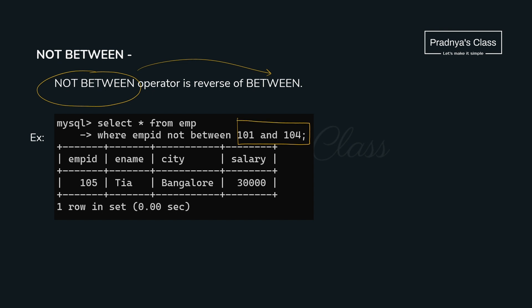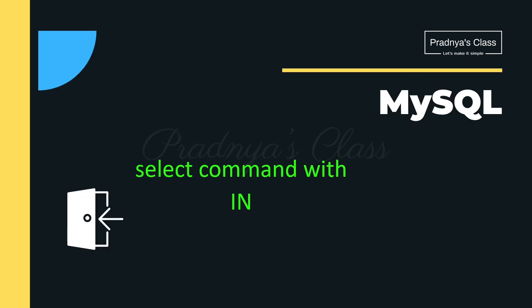There is also a NOT BETWEEN operator — it is the reverse of BETWEEN. If you don't want to display records within a given range, use NOT BETWEEN.